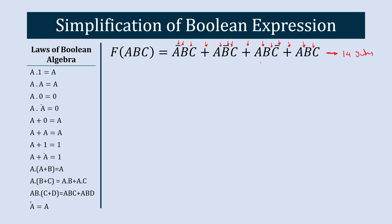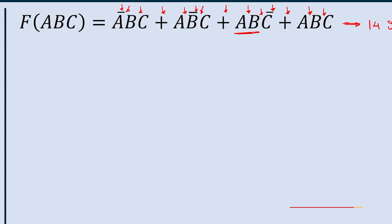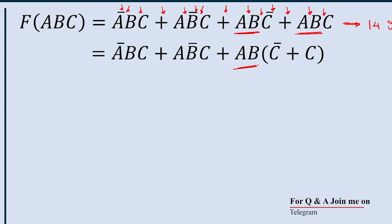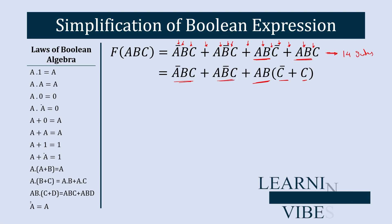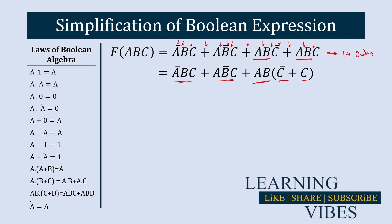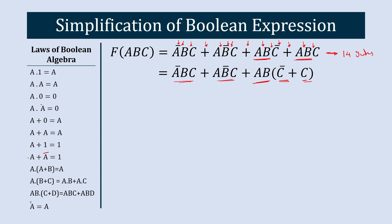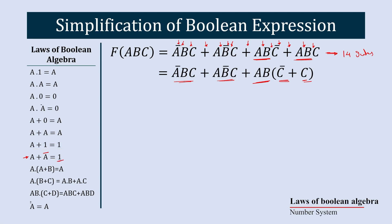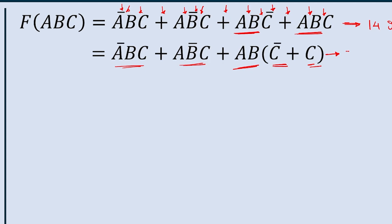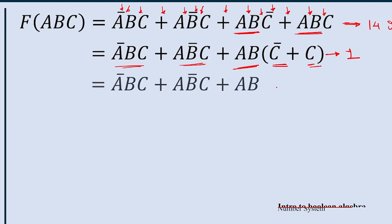Now let's start the simplification process. Here you can see AB is common in the last two terms, so if we take AB common then we are left with AB into (C̄ + C). The first two terms will stay as they are. Now here we have C̄ + C, which is similar to A + Ā, and A + Ā equals one. So we can replace C + C̄ with 1, and we are left with ĀBC + AB̄C + AB.